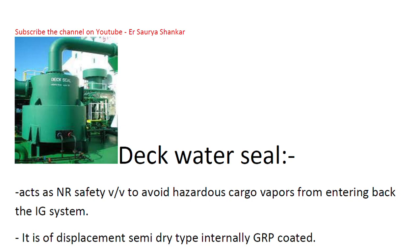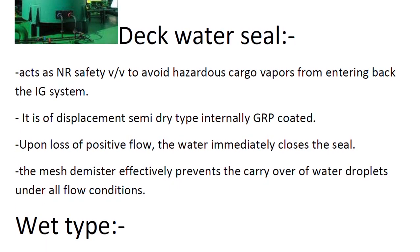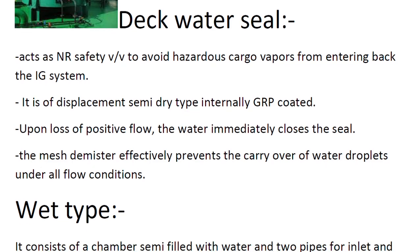The deck water seal acts as a non-return safety valve to avoid hazardous cargo vapor from entering back into the IG system. It is of displacement semi-dry type, internally GRP coated. Upon loss of positive flow, the water immediately closes the seal. The mesh demister effectively prevents the carryover of water droplets under all flow conditions.